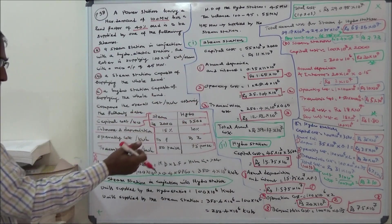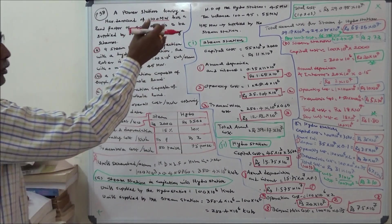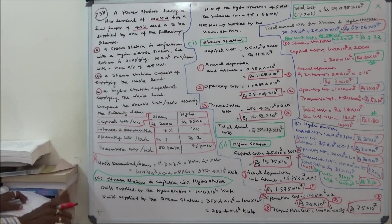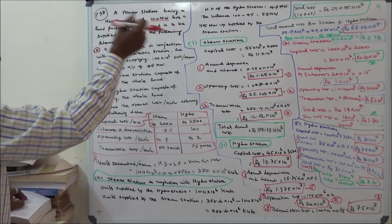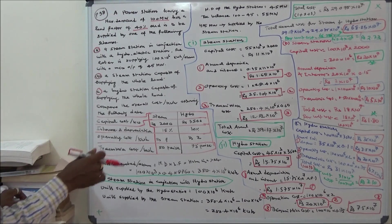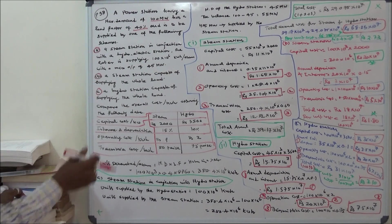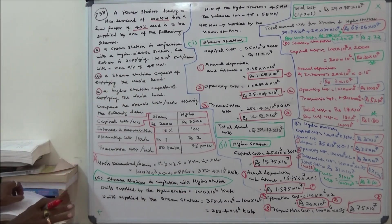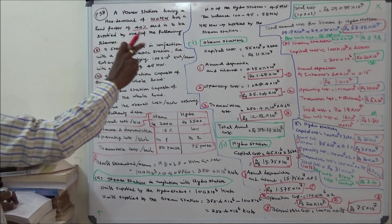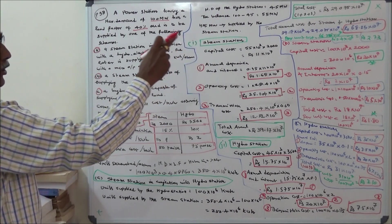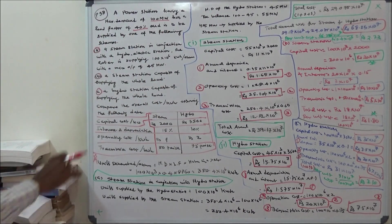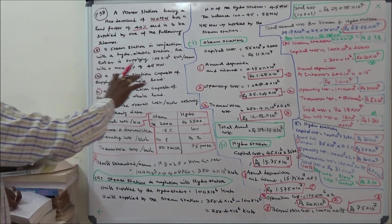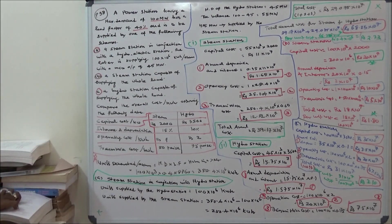Total annual cost of hydro station (interest and depreciation plus operating cost plus transmission cost) equals rupees 29.075 crores. Total annual cost of steam station and hydro station combined: 39.17 plus 29.075 equals 68.25 crores. Per unit cost: 68.25 into 10 power 7 divided by 350.4 into 10 power 6 equals rupees 2.73 (2 rupees 73 paise). That is the per unit cost of the steam station in conjunction with the hydroelectric station.